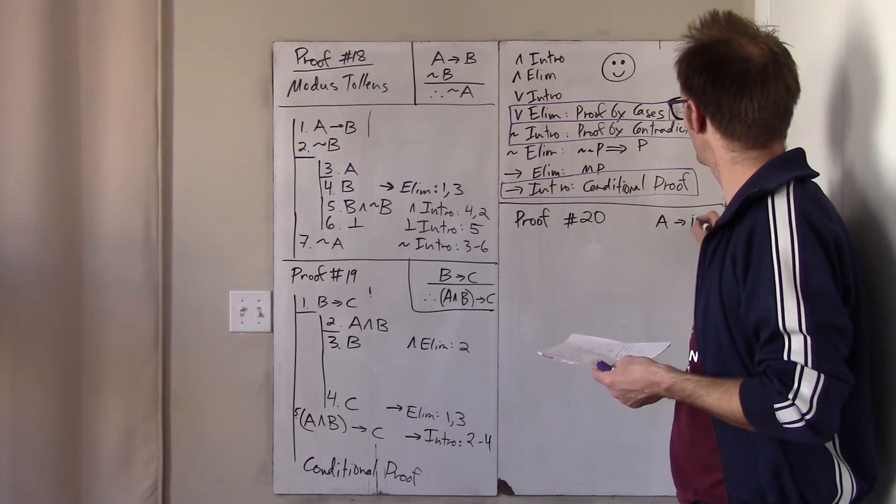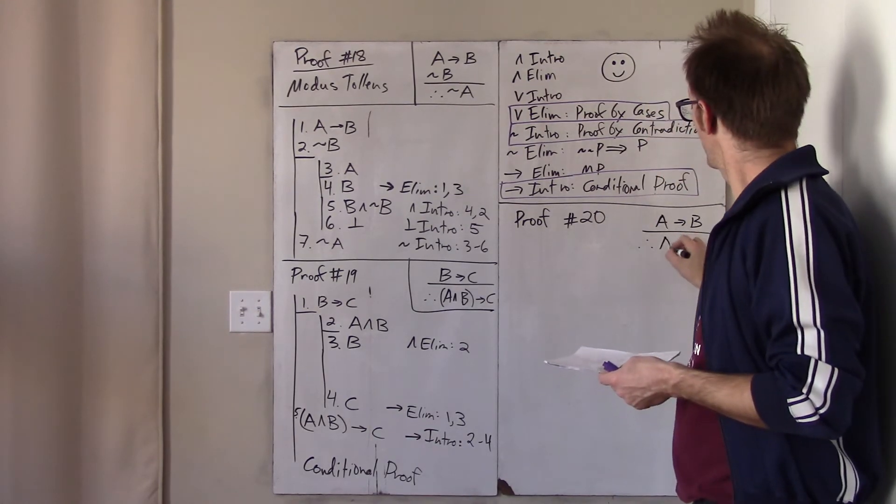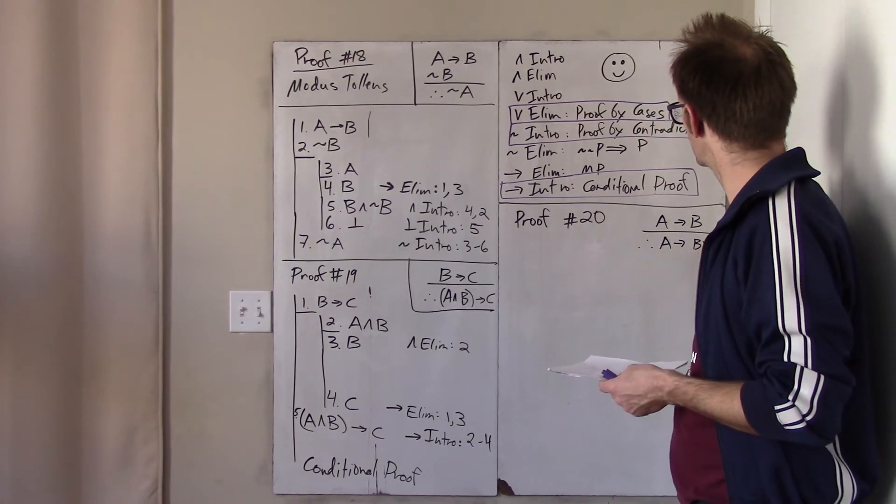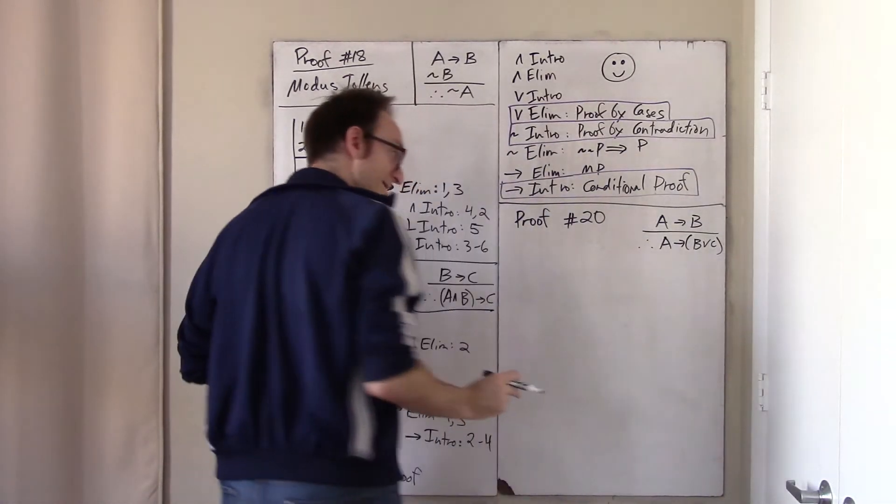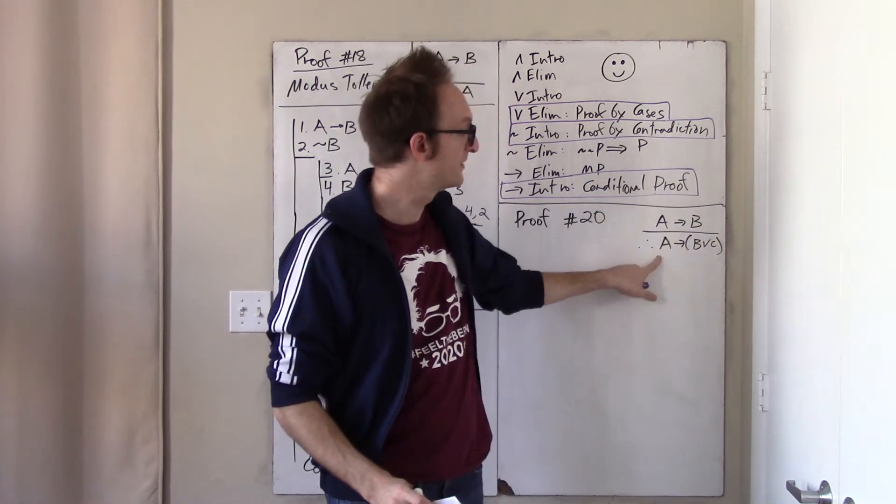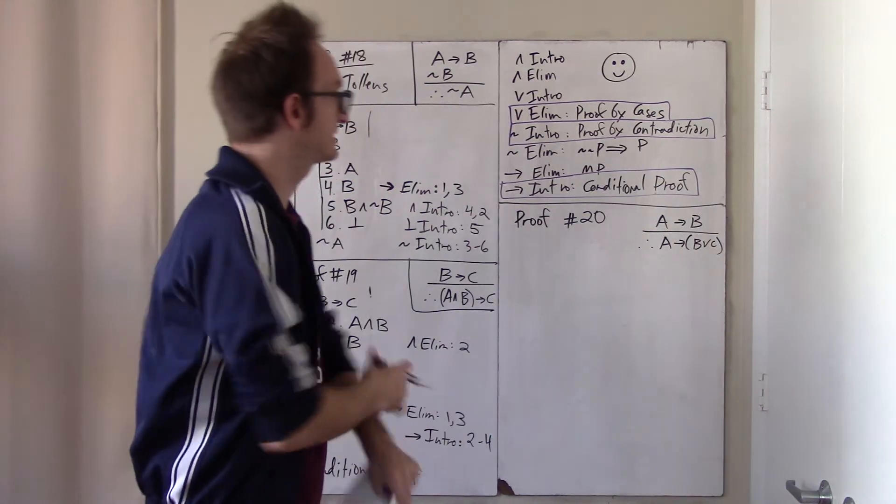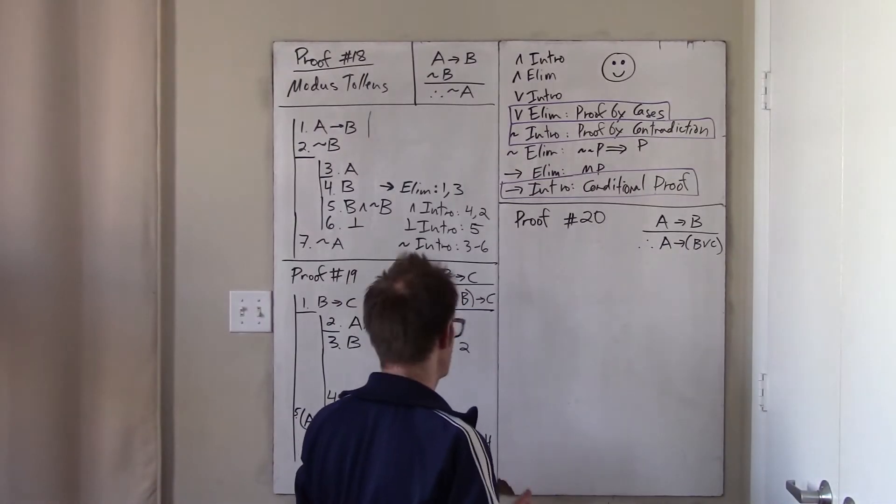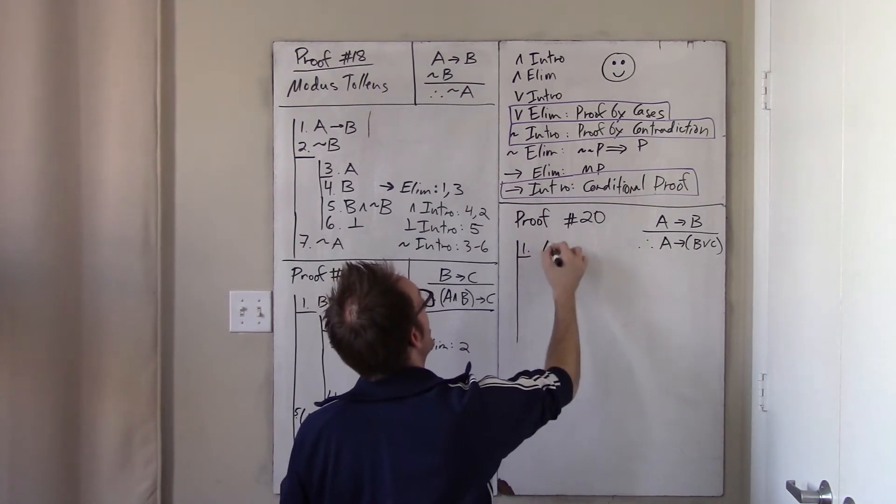Proof 20 says, if I have if A then B, I may conclude, if A then B or C. This is called weakening the consequent. In other words, if A is enough to prove B, then A is enough to prove something even weaker than B. Okay, this seems like it should be valid, it totally is valid, let's prove it using our rules. So we have one premise, which is if A then B,